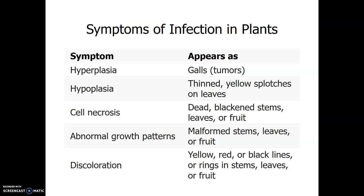Symptoms of infection in plants can occur as hyperplasia — looking like galls or tumors on the plant — or hypoplasia, which causes thin yellow splotches on leaves. Hyper means higher, causing growth; hypo means lower, causing withering. Necrosis is cell death and the area becomes blackened. There can also be abnormal growth patterns where plants are malformed, and discoloration.